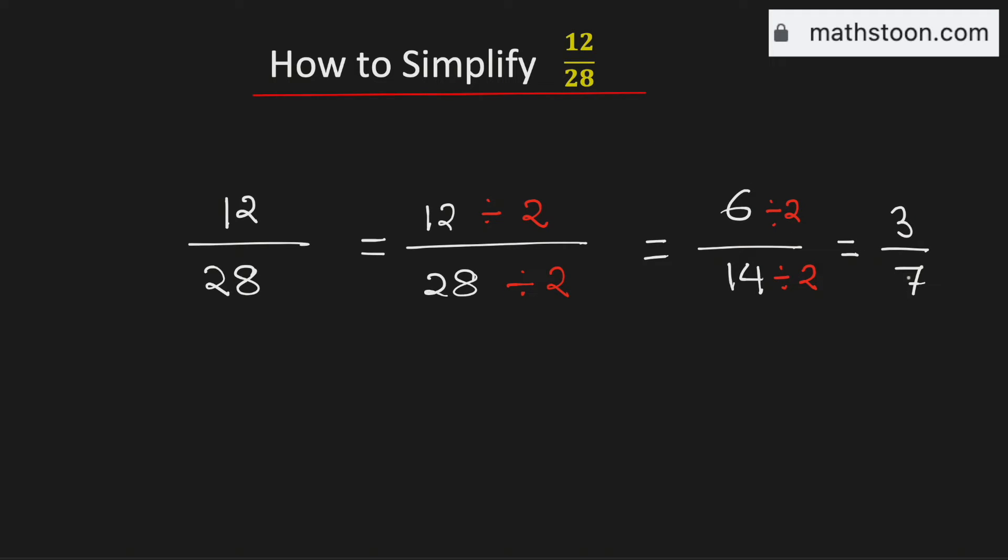As both 3 and 7 are prime numbers this fraction cannot be simplified further. So 3 over 7 is the simplified reduced form of the fraction 12 over 28. And this is our final answer.